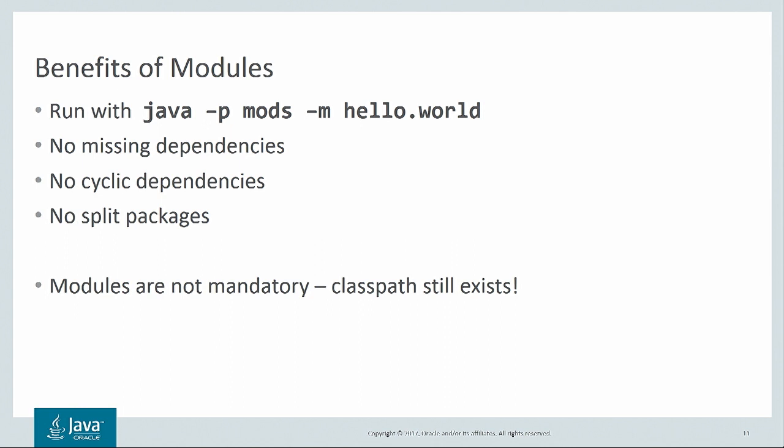There are quite a few benefits to putting code in modules. The hello world module can be run with a simple java command that points to a directory of modules using the -p flag, and specifies the module to be run with the -m flag. You don't need to set the class path — the modules themselves say what they depend on. JDK 9 checks the dependencies both when you compile and when you run, verifying that every module that is required is available. That's a big improvement over the class path where you don't discover missing jars until later.